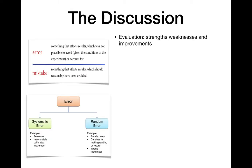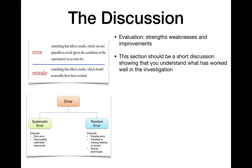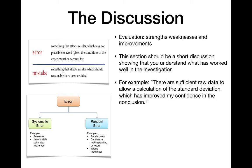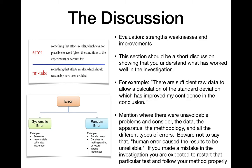Let's talk about the discussion. In the evaluation part of your discussion, we talk about strengths, weaknesses, and improvements. So this should be a short part of your discussion that's going to show that you understand what worked in your investigation and what did not work well. For example, you could say there's sufficient raw data to allow a calculation of standard deviation, which is at least five trials, which improved my confidence in the conclusion. That's a great way to say the strength of your investigation is the amount of data you collected. And you can also talk about errors, unavoidable problems. Talk about the data, the apparatus, methodology, all types of errors.